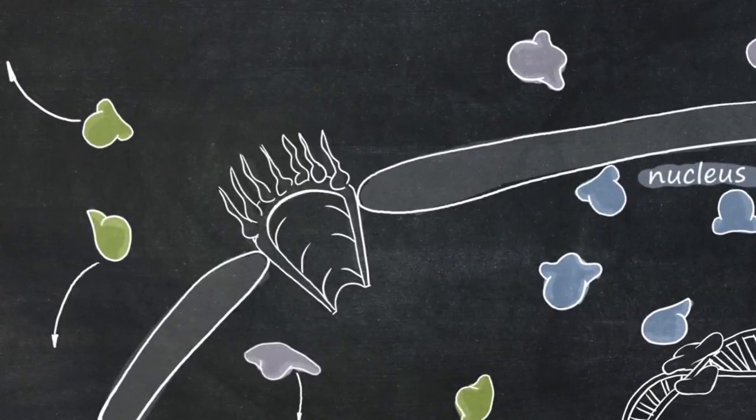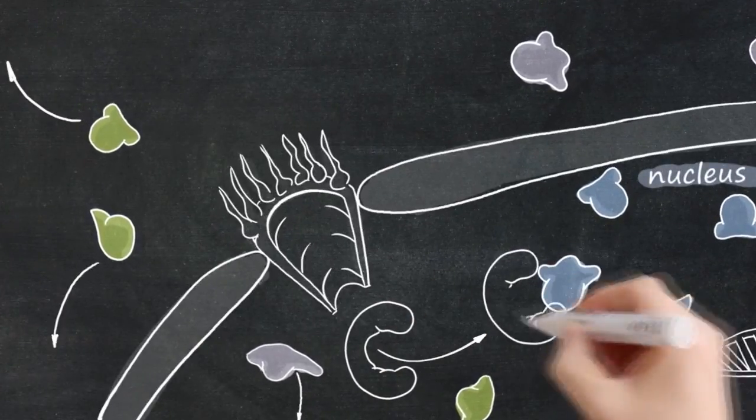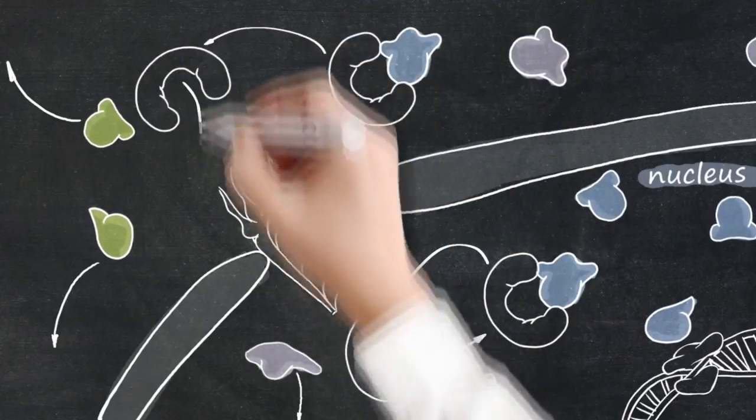XP01 is a critical transporter which shuttles over 200 different proteins from the nucleus to the cytoplasm.